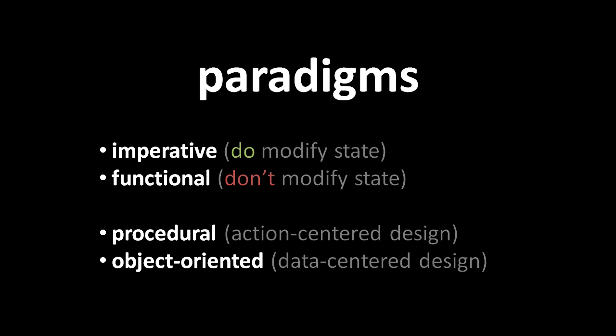So like with static vs. dynamic typing and weak vs. strong typing, we have four combinations: imperative and procedural, imperative and object-oriented, functional and procedural, or functional and object-oriented.